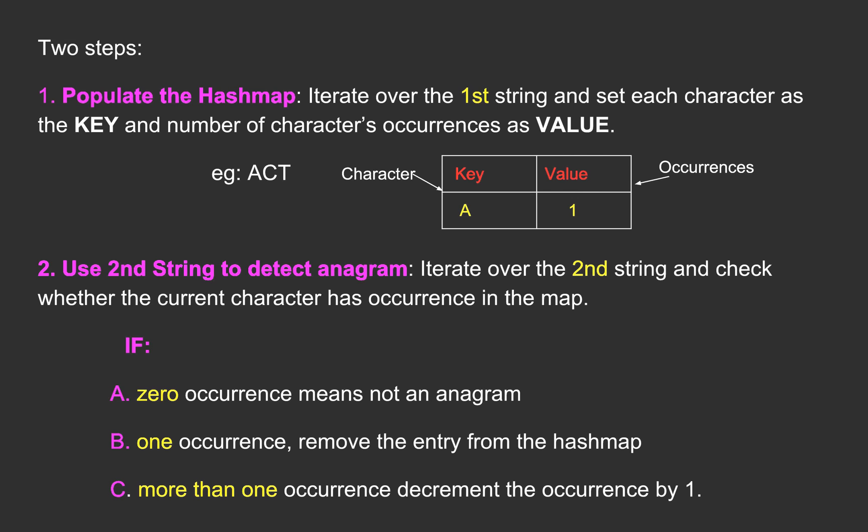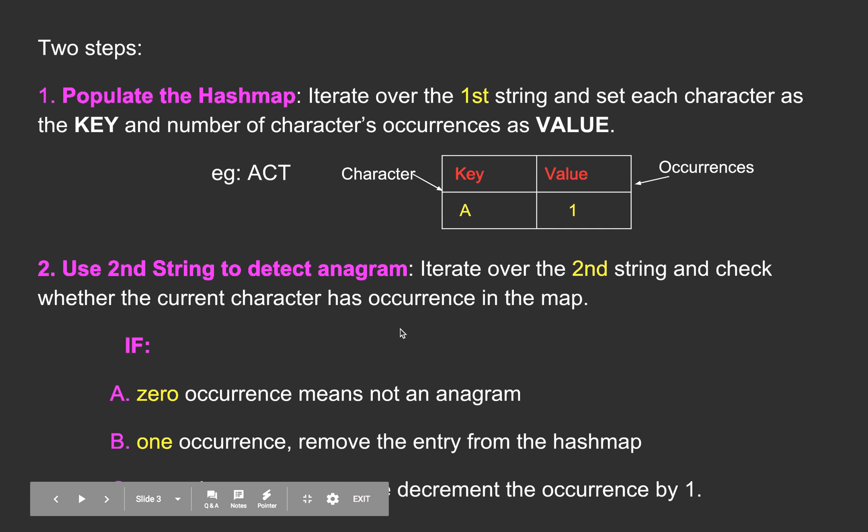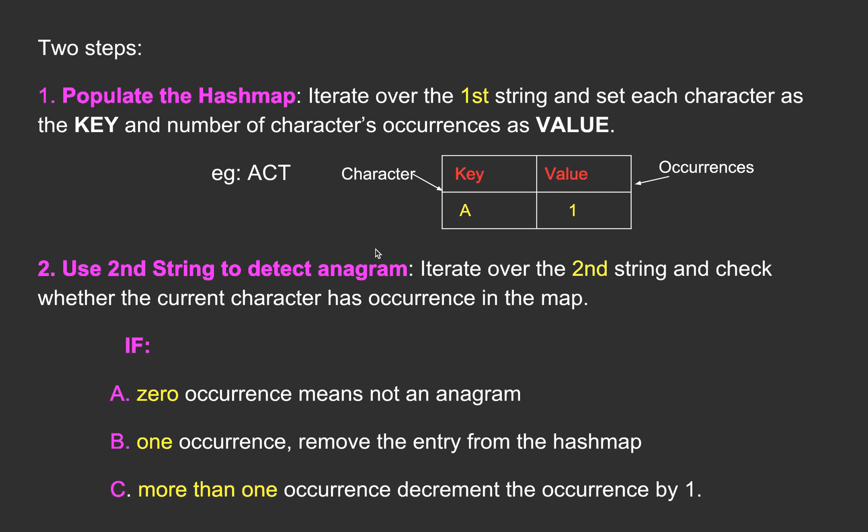In the second step, we will iterate over the second string and check whether the current character has an occurrence in the map. If it has zero occurrences, it means the given strings are not anagrams. If the character has one occurrence in the map, we will remove the entry from the hash map. If the character has more than one occurrence, then we will decrement its value by one.